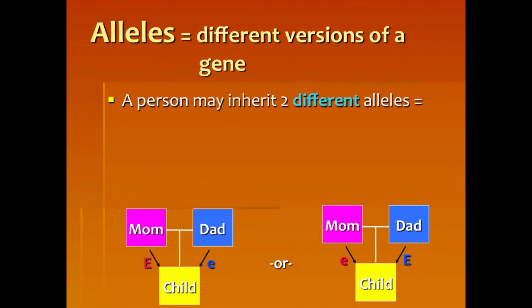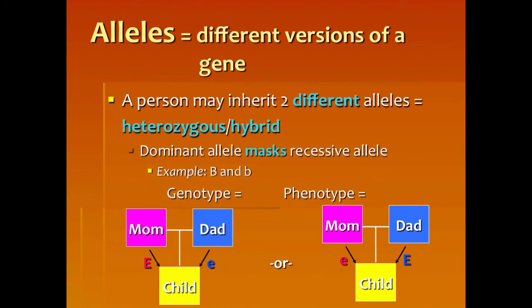What if the alleles are different? A person may inherit two different alleles. If homo means same in Latin, the word for different is heterozygous — hetero means different. When you have a heterozygous gene, you have one of each: one dominant and one recessive. The dominant will always mask the recessive allele, just like with the mother — she has brown eyes even though she carries the blue eye gene, because brown is dominant over blue. The genotype for this child would be big B, little b, and the phenotype would be brown, because dominant always shows.